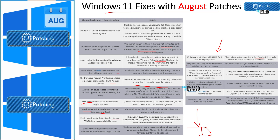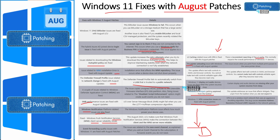As you can see in every Patch Tuesday, there are printing-related fixes, and August patches also include some printing-related fixes. Windows 11 widgets-related fixes are available, there was an audio/video issue when the system resumes from sleep that got fixed, and there is also a fix for a VPN connectivity issue.